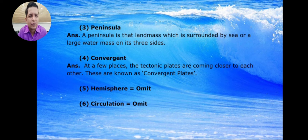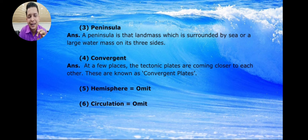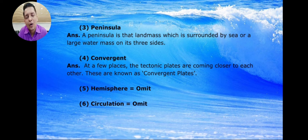Peninsula: if you look at India on the map, you will see three water bodies surrounding it. A piece of land that has water on three sides is called a peninsula. Since India has the Bay of Bengal to the east and the Indian Ocean to the south and west, it is a peninsula. A peninsula is a land mass which is surrounded by sea or a large water mass on three sides.